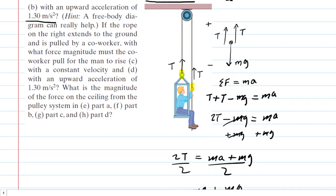Now we go up to parts C and D, and things change a little here. It says, if the rope on the right extends to the ground and is pulled by a co-worker, with what force magnitude must the co-worker pull for the man to rise? Again, with constant velocity, and then later again with upward acceleration of 1.3 meters per second squared. So let's just redraw the picture and get a feel for what's going on here.